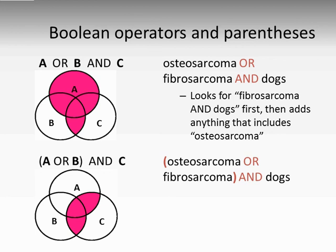In search engines, as in math, parentheses always come first. If you don't use them, the database won't necessarily know what you mean, and you'll get some confusing results. If you were to search for osteosarcoma OR fibrosarcoma AND dogs, a human would know that you wanted articles about dogs with osteosarcoma or fibrosarcoma. The database, though, will search for fibrosarcoma AND dogs first, and then add in any results about osteosarcoma, burying the results for dogs among articles about osteosarcoma in humans, cats, and ferrets. Putting parentheses around the terms that go together, as in the second example, forces the database to conduct the search in the correct order, gives you more accurate results, and saves your time.